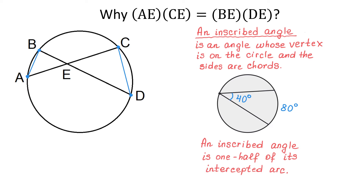Now, in the figure to the left, the angle ABD intercepts the arc AD, and the angle ACD also intercepts the arc AD. So if we know the measure of this arc, then each of these angles would be half of the measure of this arc. Then we can say that the measure of angle B in the first triangle is equal to the measure of angle C in the second triangle.